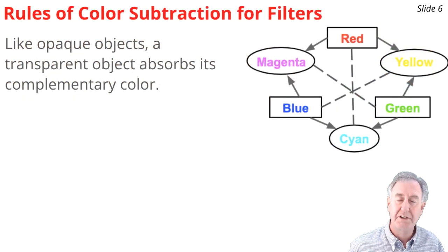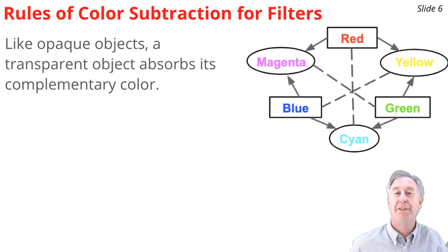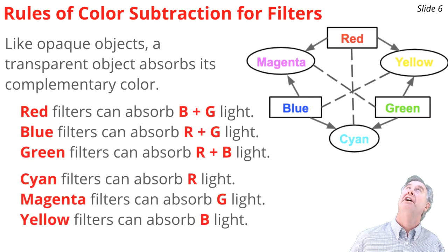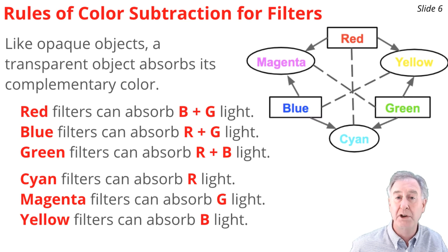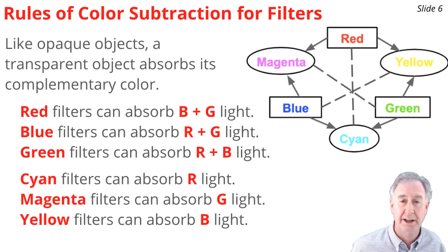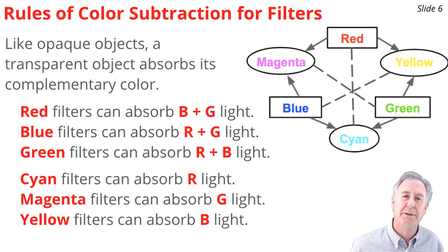Throughout these videos on the physics of color, we've been talking about the rules of color subtraction and the use of the color wheel to predict what colors of light an object can absorb. It works the same with filters. If you know the color name of a filter, you look straight across the color wheel to the opposite side to see what primary colors get absorbed. For instance, a red filter absorbs cyan light — that is, blue and green. A blue filter absorbs yellow, or red and green. A green filter absorbs magenta, or red and blue. Similarly, a cyan filter absorbs red, a yellow filter absorbs blue, and a magenta filter absorbs green.